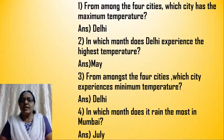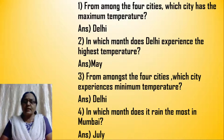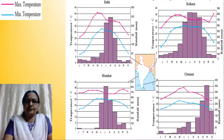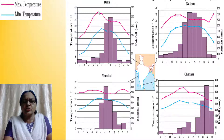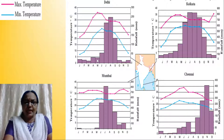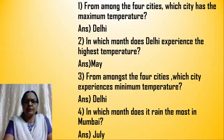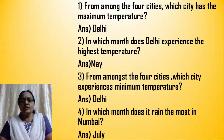In which month does Delhi experience the highest temperature? Looking at the graph, the highest temperature is above 41 degrees. It is in the month of May. So Delhi records the highest temperature in the month of May.